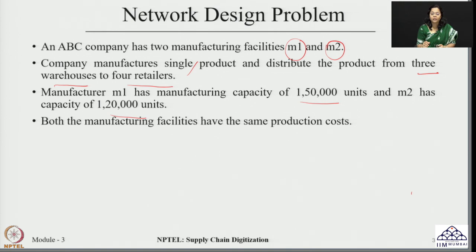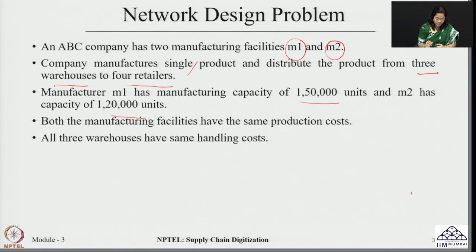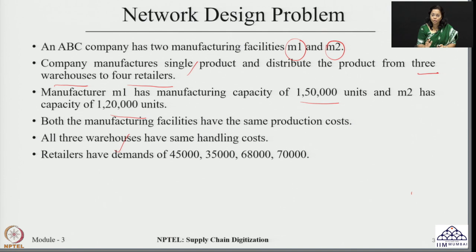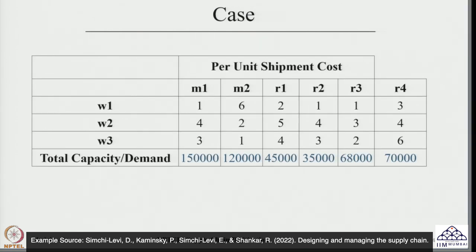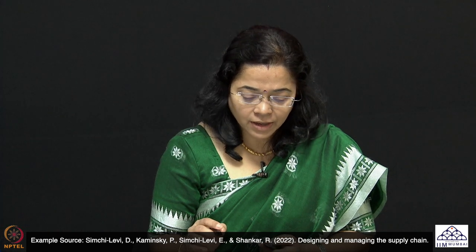It is assumed that both manufacturing facilities have the same production cost, and all three warehouses have the same handling cost — simplifying assumptions made for this problem, though in real life these costs can differ. The four retailers have demands of 45,000, 35,000, 68,000, and 70,000 units respectively.